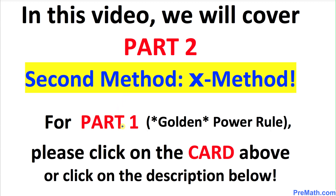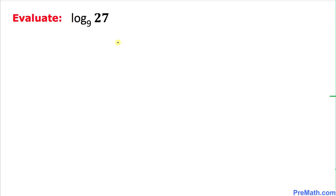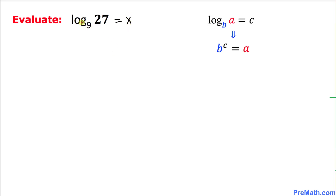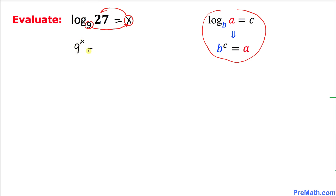To watch part 1, please click on the card above or wait till the end of this video. Here is our very first example: log of 27 with the base of 9. I am going to set this log equal to x and find the value of x. We want to convert this logarithmic equation to an exponential one. Applying the rule, the base 9 to the power x equals 27.